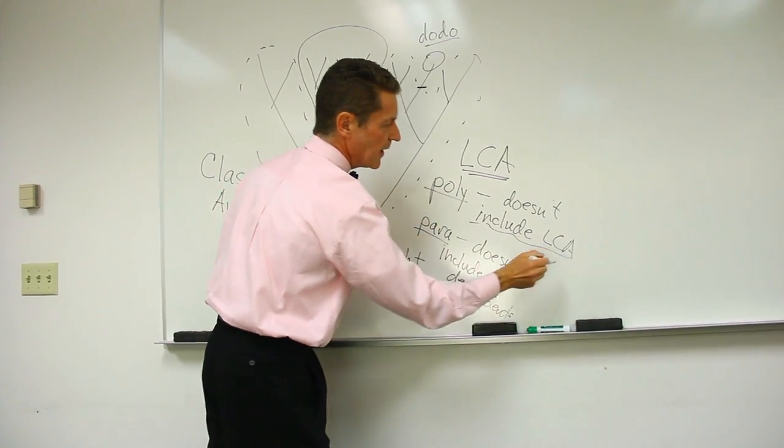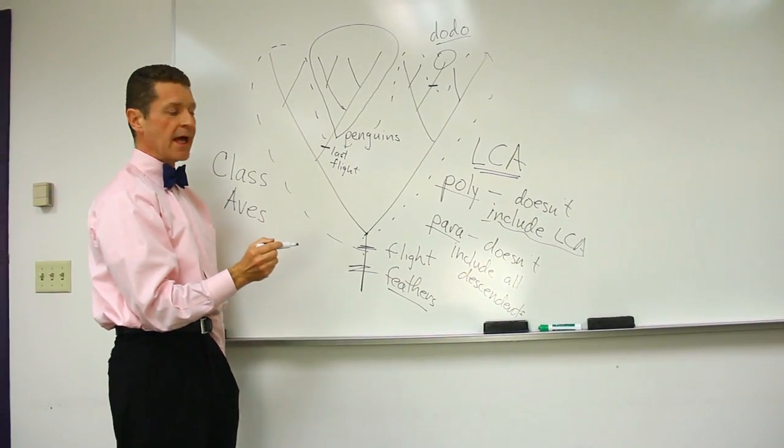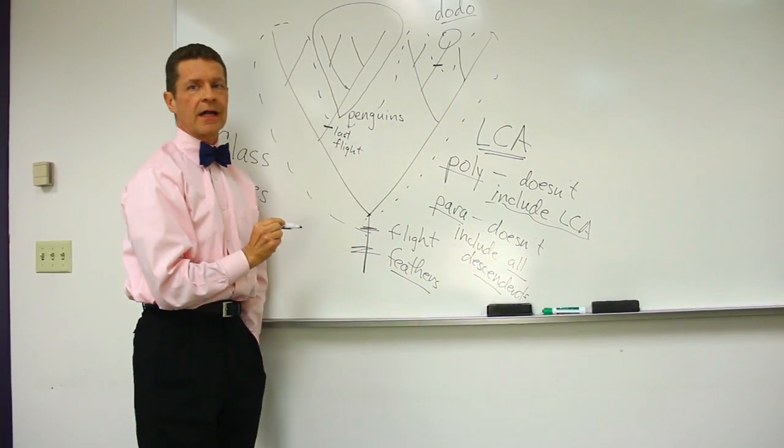does it include the LCA or not? And does it include all descendants or not?